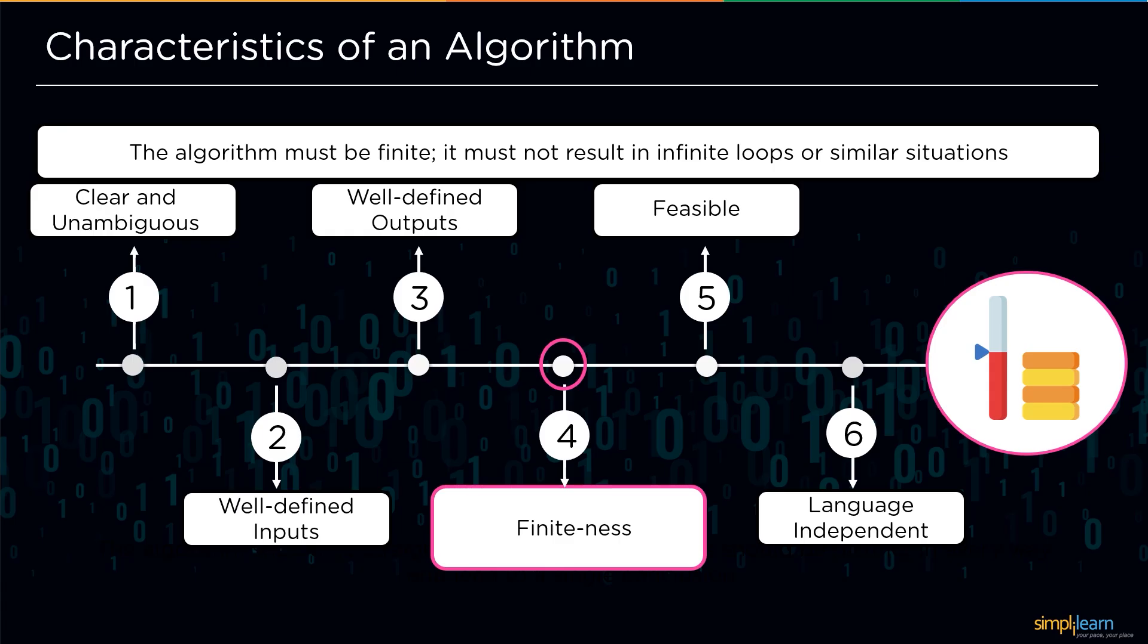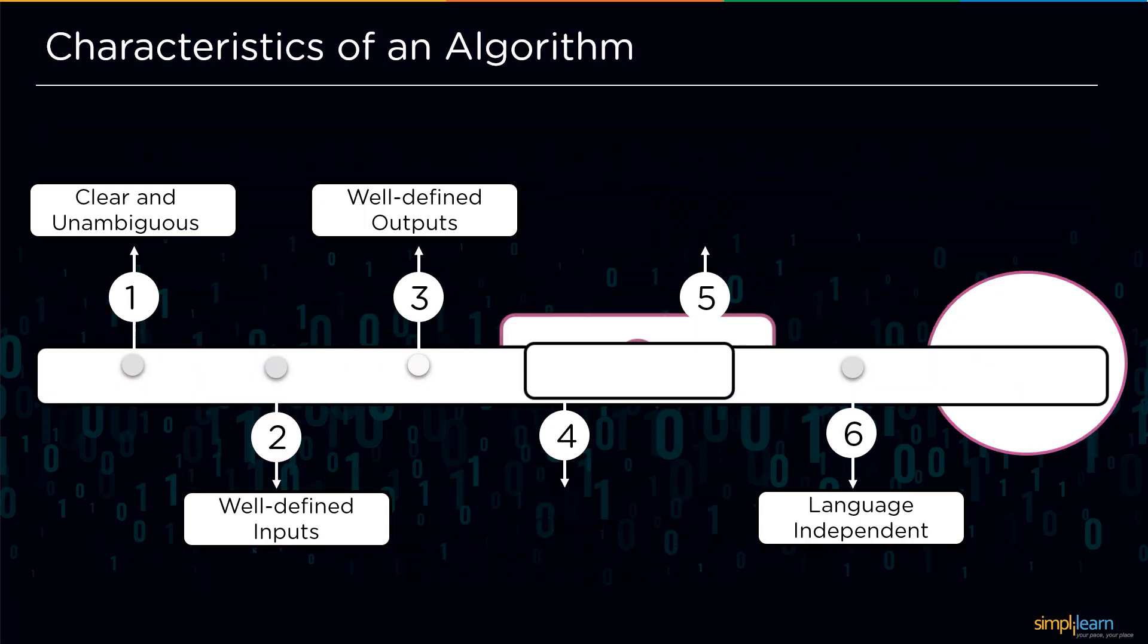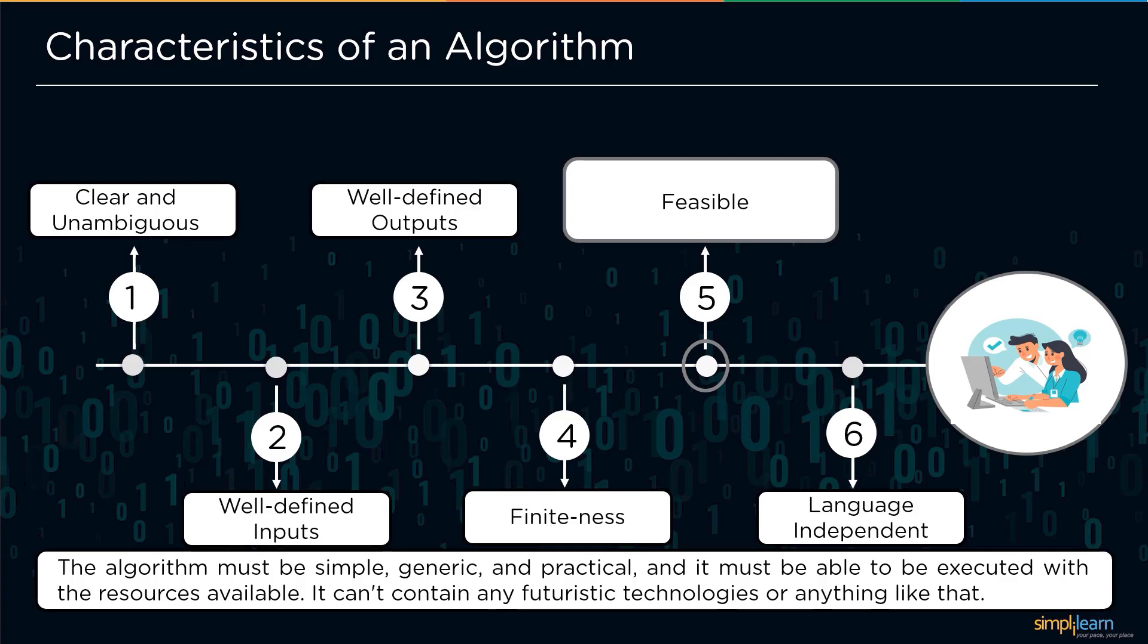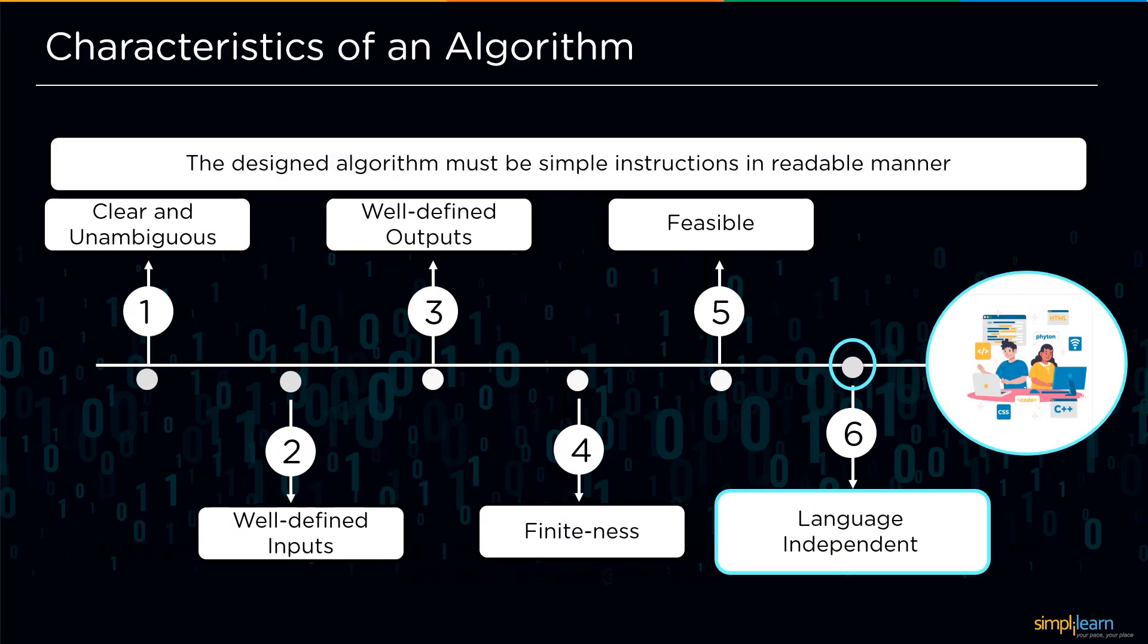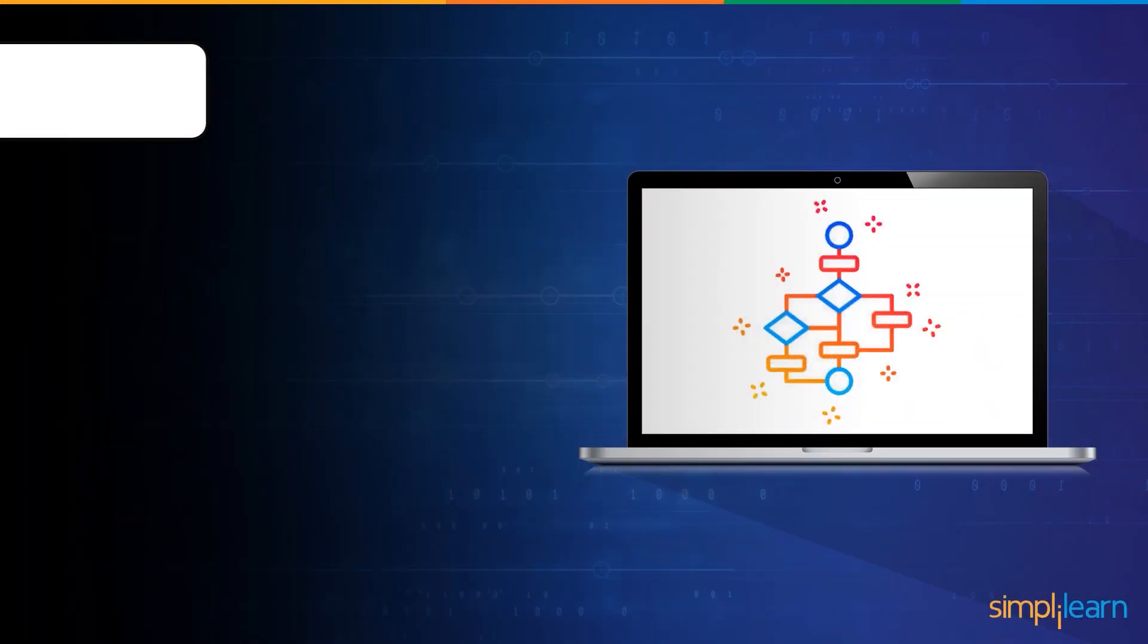The fifth characteristic is feasibility of an algorithm. Feasibility states that the algorithm must be really simple, generic and practical. It must be able to be executed with resources available. The last characteristic of the algorithm is being independent of the language. It means that the algorithm should be defined in such a way that it is completely independent of the language. It must be simple instructions that can be implemented using any programming language. So these were the six major characteristics of algorithm.